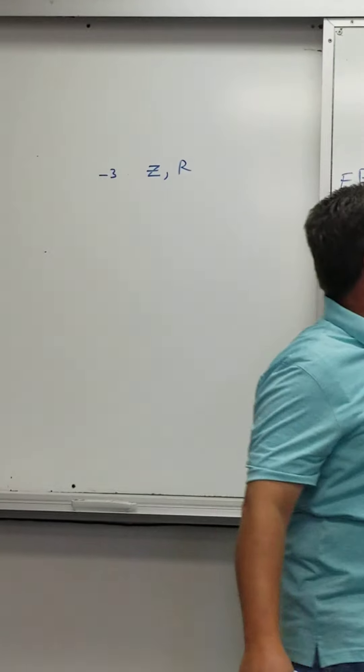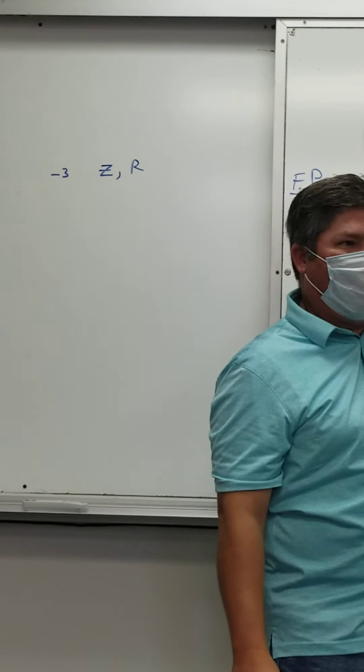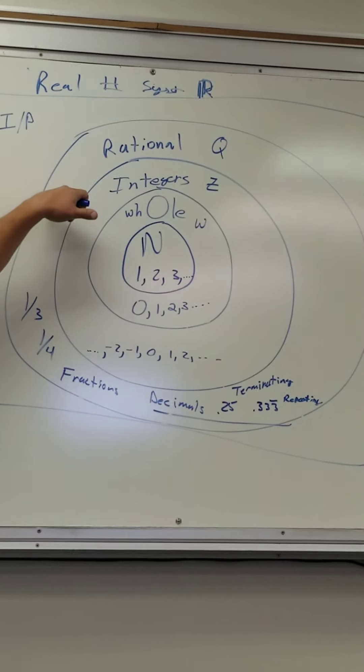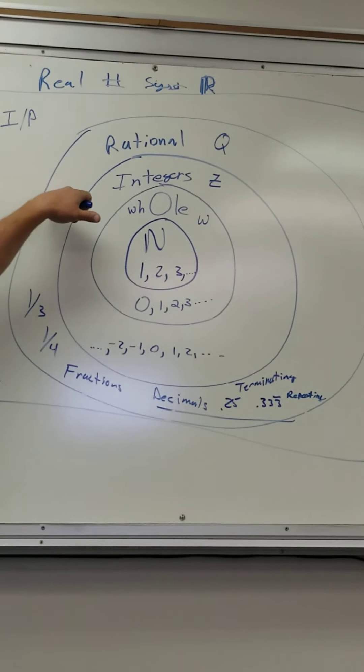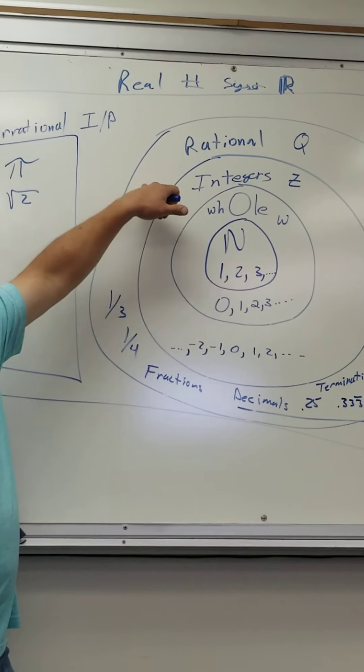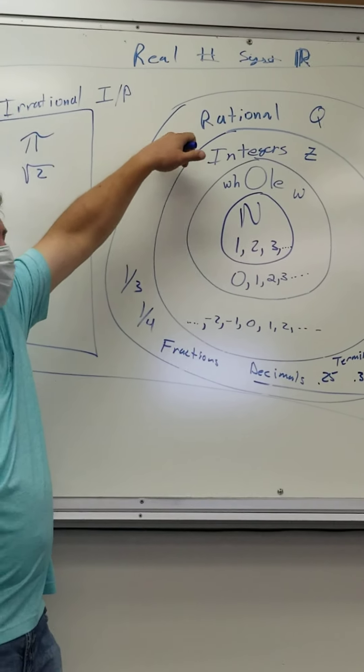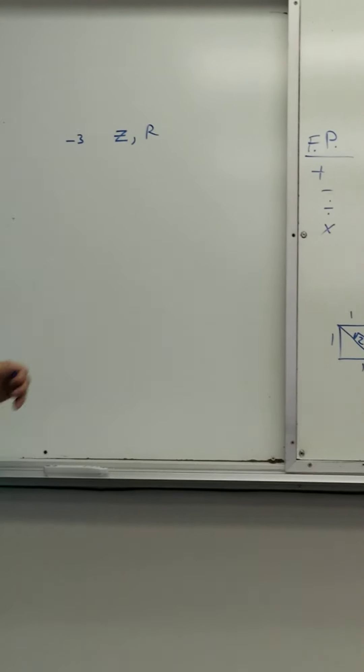If it's on the inside circle, every outside circle must apply. That's something you might want to write in your notes. If it's on an inside circle, every outside circle has to apply. Every integer is also rational. Every whole number is both an integer and rational. You with me on that? So if it's inside a circle, it has to apply.